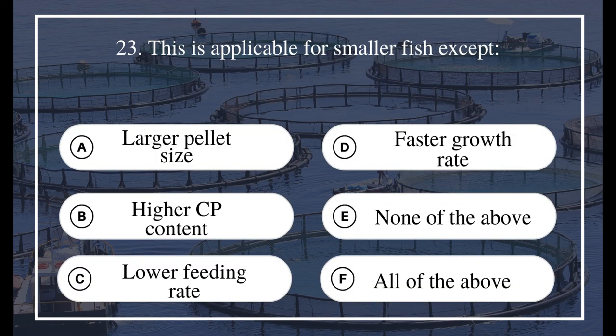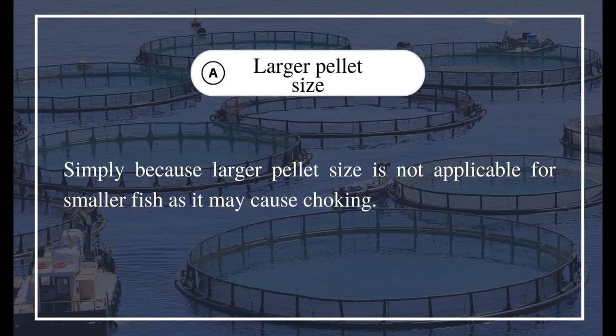Question 23: This is applicable for smaller fish EXCEPT — A) Larger pellet size, B) Higher CP content, C) Lower feeding rate, D) Faster growth rate, E) None of the above, F) All of the above. The answer is A) Larger pellet size. Simply because larger pellet size is not applicable for smaller fish as it may cause choking.